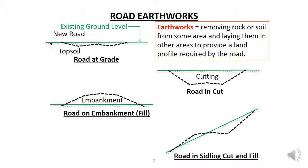Earthworks involve reshaping the land surface by removing soil or rock from one area and relocating it to another area to produce a smooth profile required by a road. For example there may be gullies and hills along the road route, so we need to cut into the hills and fill in the gullies so the road follows a direct route and the slopes on the road or grades are smooth and as shallow as possible.